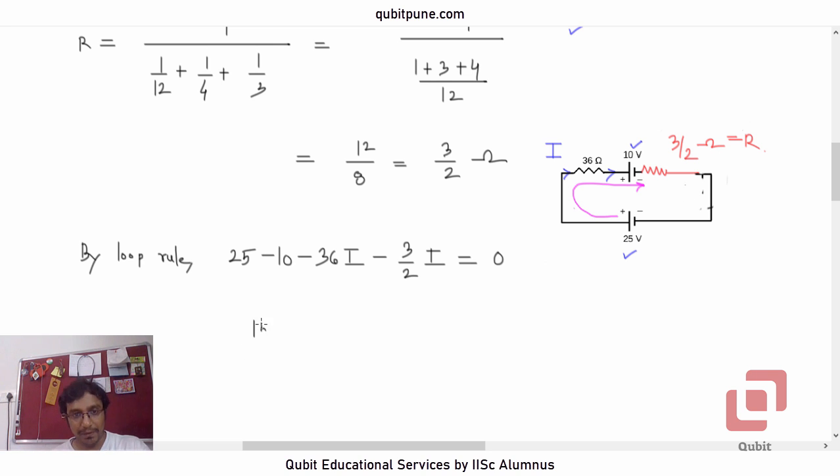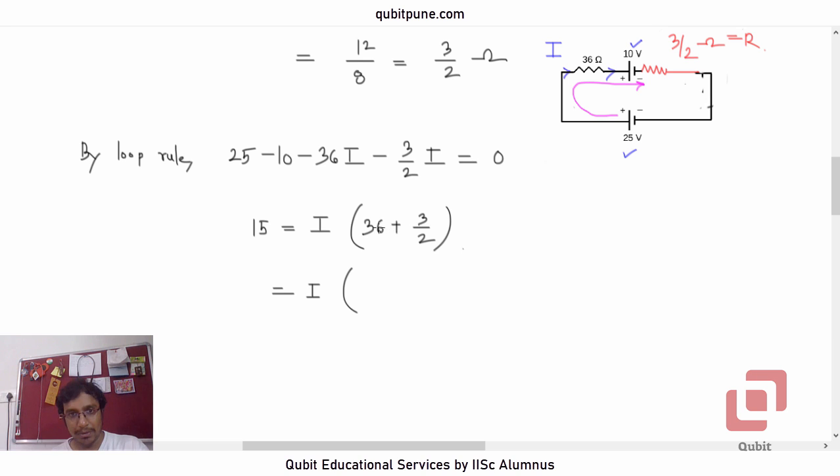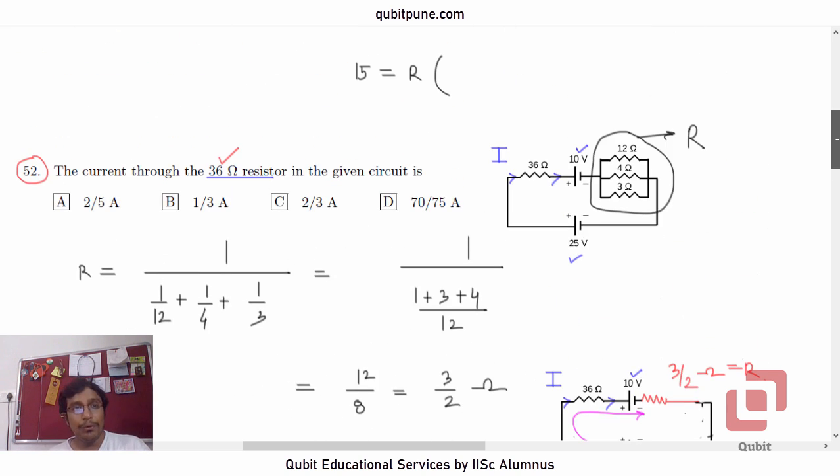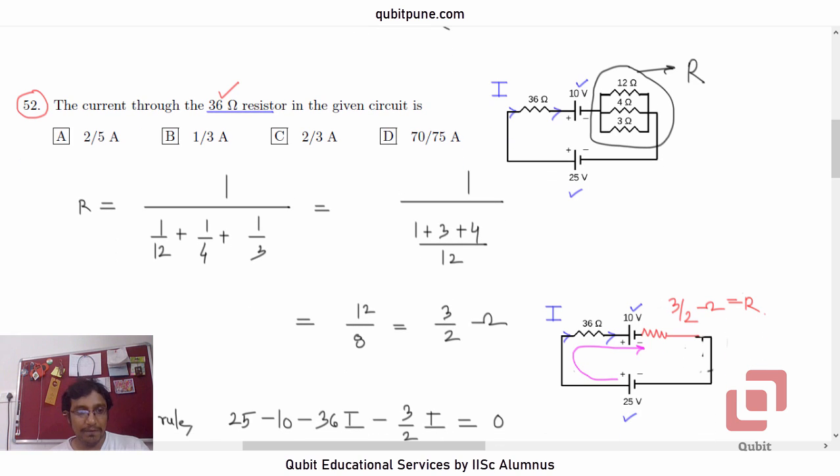25 minus 10 is 15. Take I to the other side. So it will be 36 plus 3 by 2. So it will be R into 36 plus 2, 2 is 72, 72 plus 3 is 75 by 2. So how much will be the current? Current will be 15 into 2 by 75. So that's 2 by 5 amperes or 0.4. 2 by 5 is 0.4. 2 by 5 option.